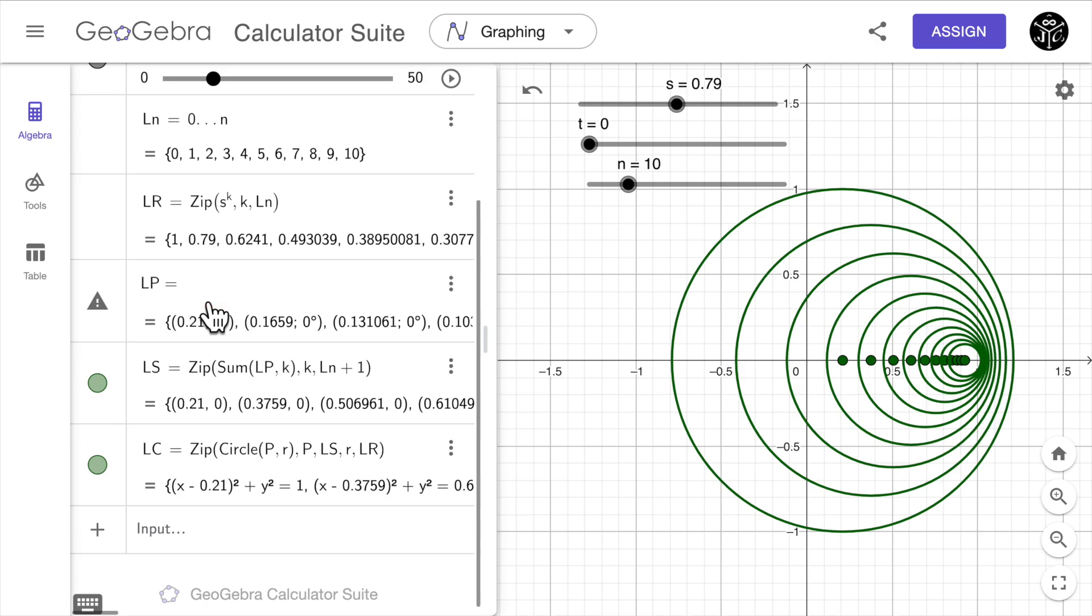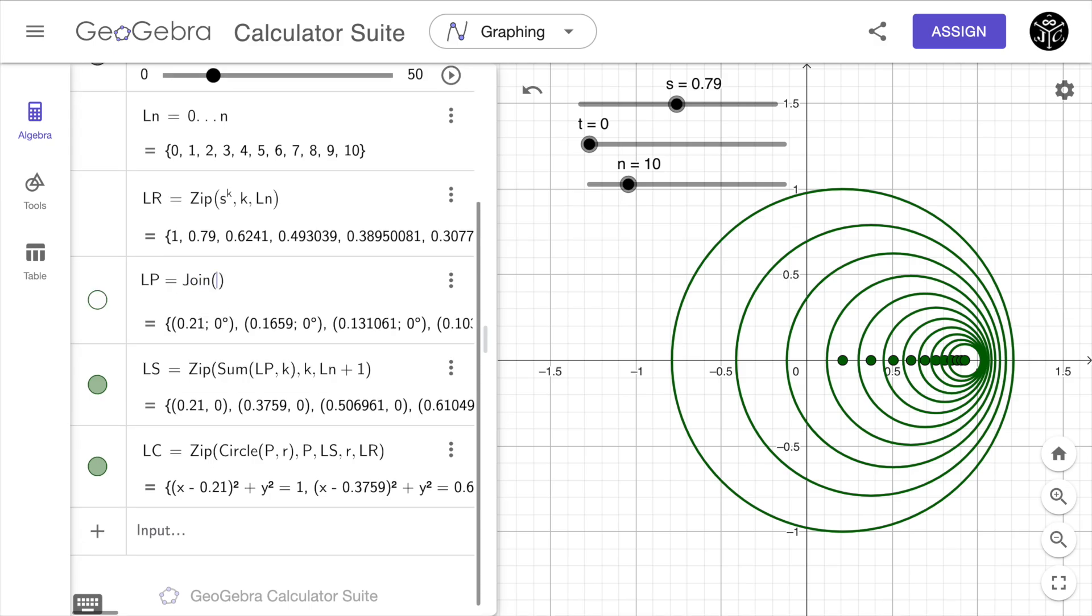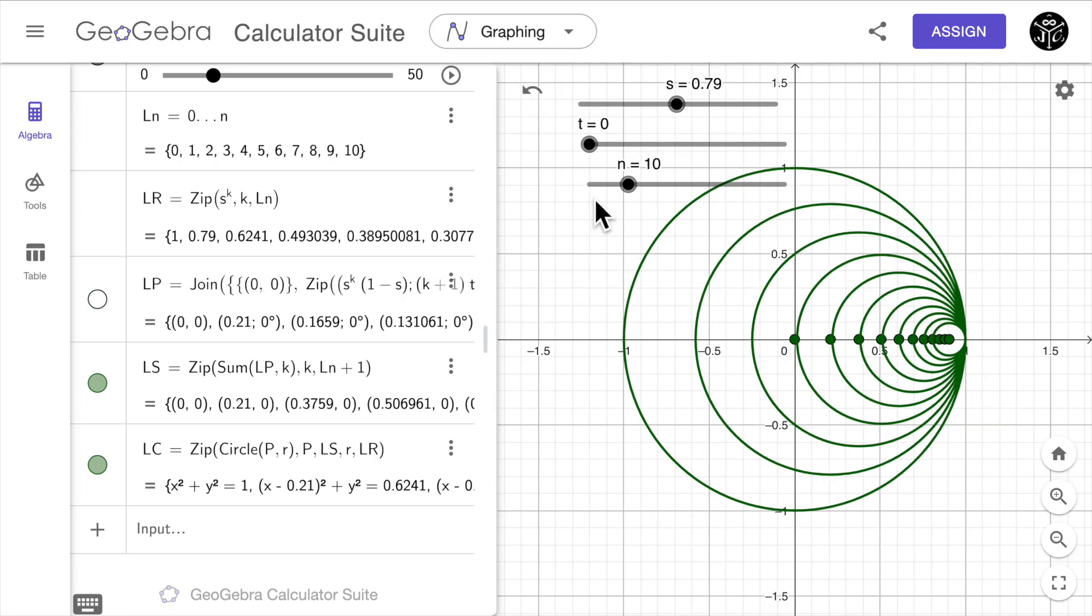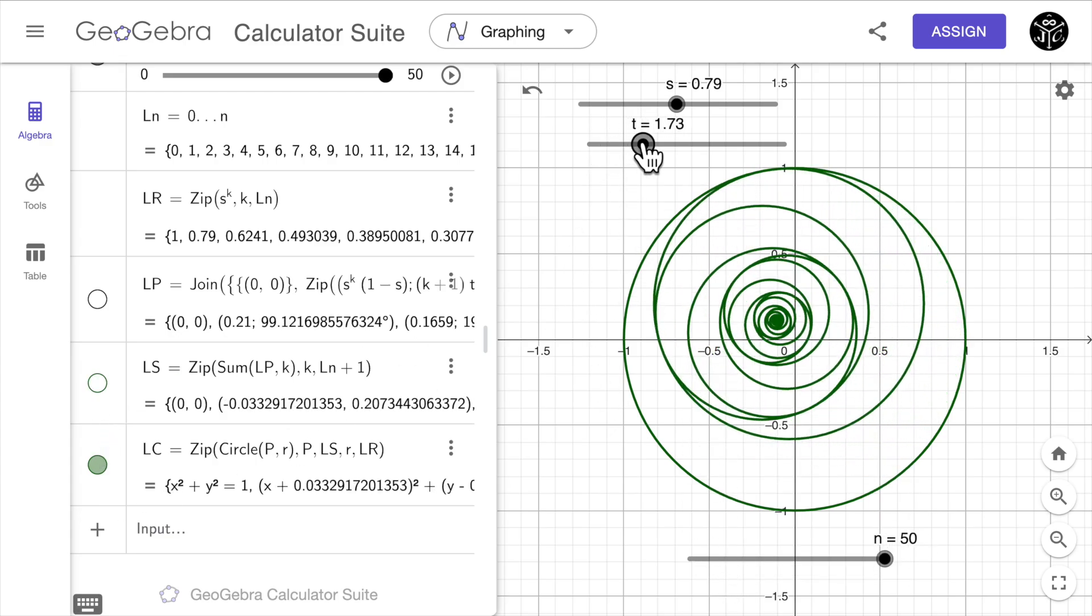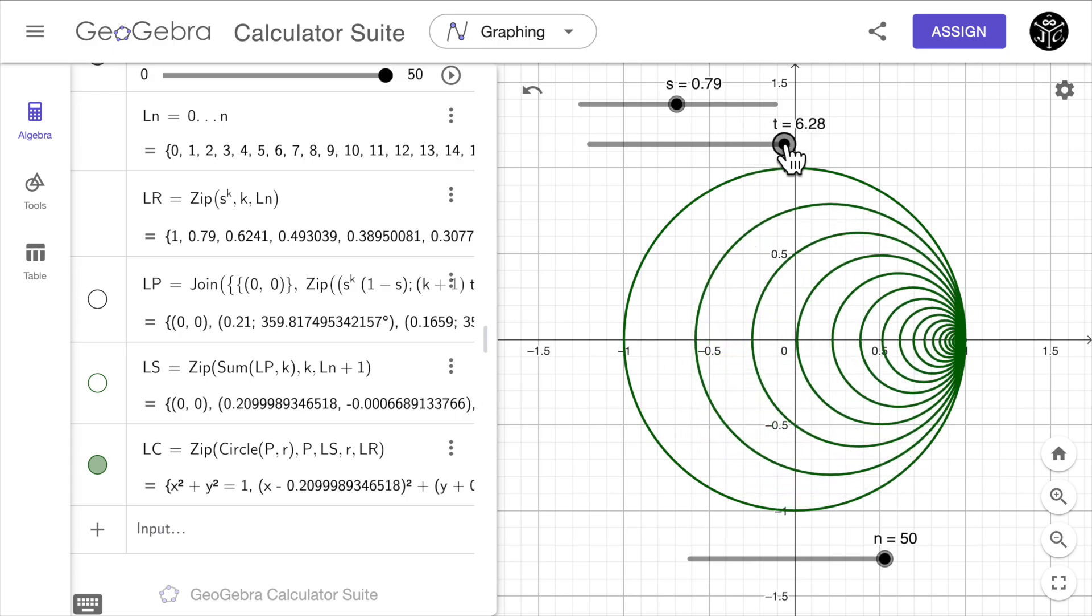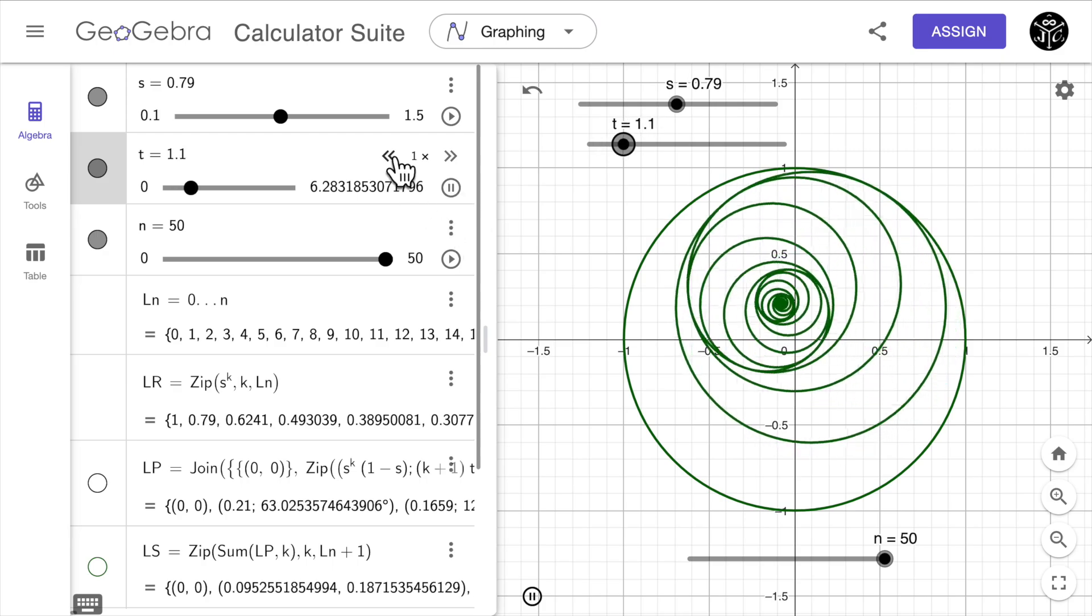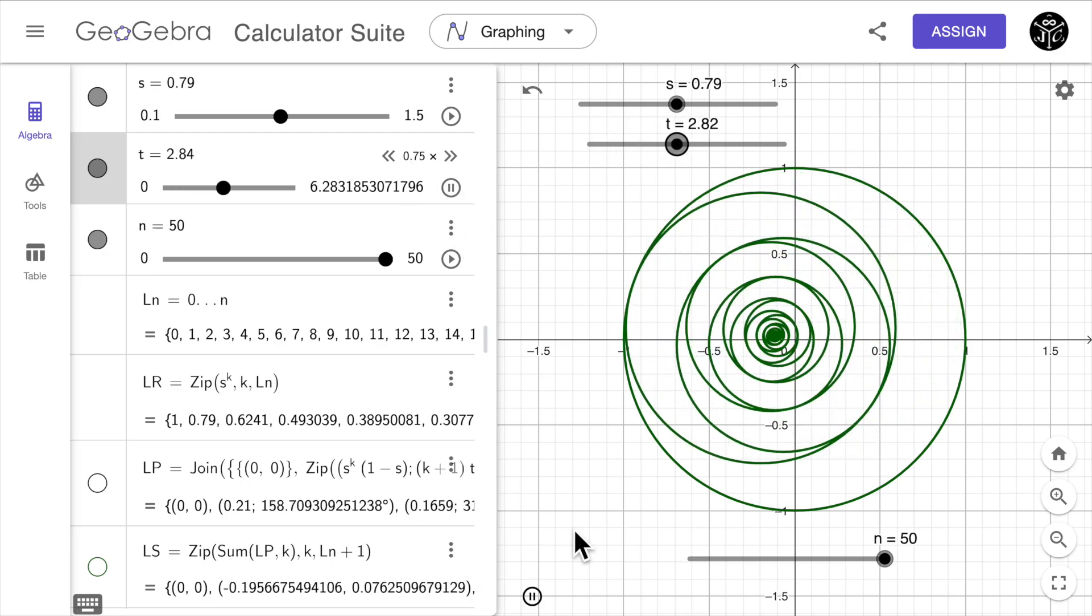We can do this by typing the command join open curly brackets and type the point zero comma zero comma the sequence of polar points defined as before. Now let's add more circles to the list and also hide the centers. I'm going to put this slider down here and this should give the animation that we were looking for. We can either drag the slider t or click on the little button play to animate automatically.